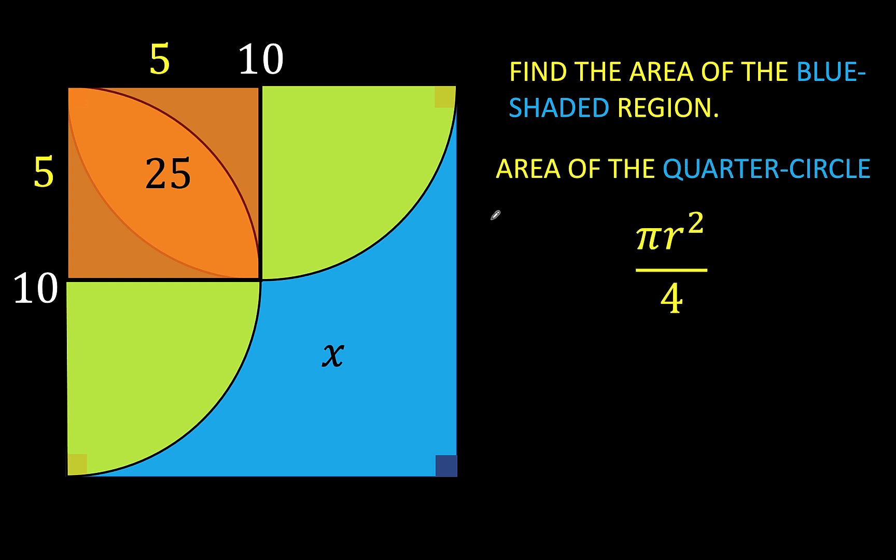computed by the formula πr² over 4, or one-fourth the area of a circle with a radius r. Here our radius is 5 units, and therefore the area of one quarter circle is π times 5 squared over 4. Simplifying this gives us 25π over 4 for the area of each of these green quarter circles.